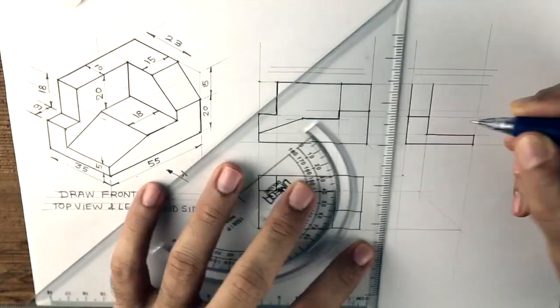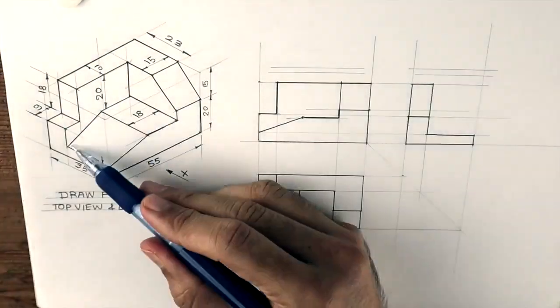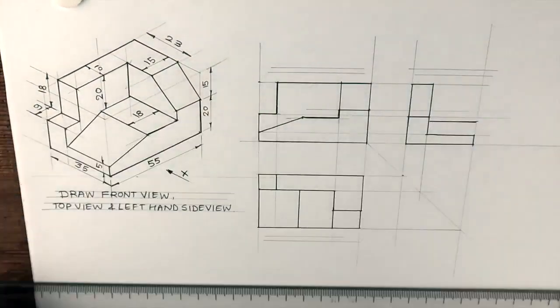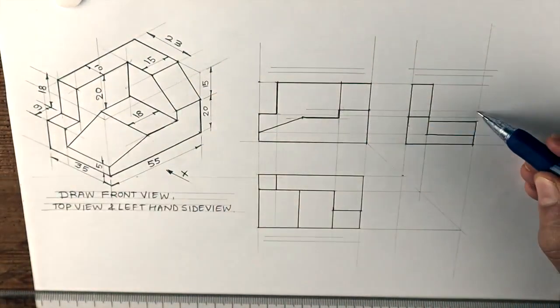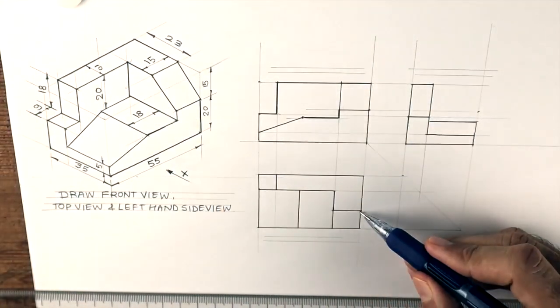After that, just draw a vertical line. We'll get that slope or rectangle. For the slope, you project line, and for this slope, you project from front view and top view.